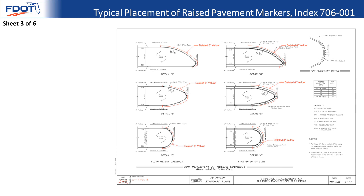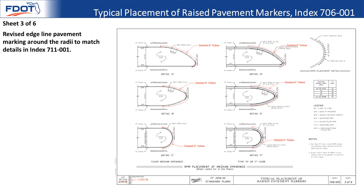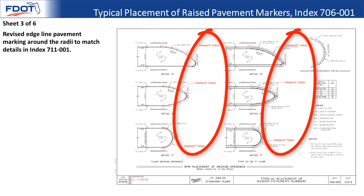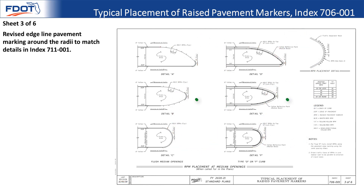Index 706-001, typical placement of raised pavement markers: the only real change for this upcoming cycle is that the edge line pavement marking around the noses has been deleted to match the details in index 711-001. The RPMs are retained, and the yellow reflective paint where it applies to the curve is still shown.